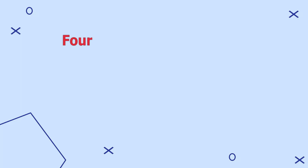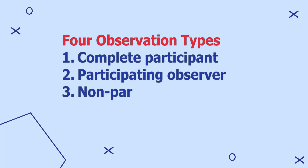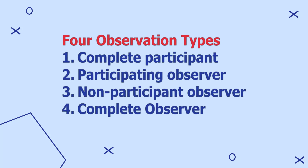During observations, the observer will be involved in what they are observing to a certain extent. The extent to which an observer is engaged in making observations will determine the observation type they are engaged in. There are four observation types: complete participant, participating observer, non-participant observer, and complete observer.